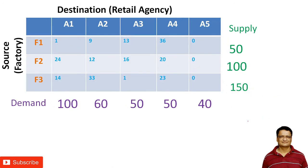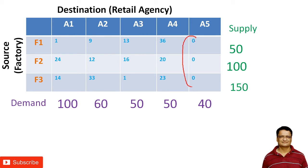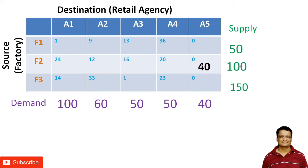We have assigned zero transportation cost to all cells in this dummy column, and the total becomes 300. Now with the modified matrix, we apply the least cost method. Looking at the matrix, we look for the minimum cost. There are three zero-cost cells which are equal, so I can allocate 40 units randomly — I allocate 40 here.